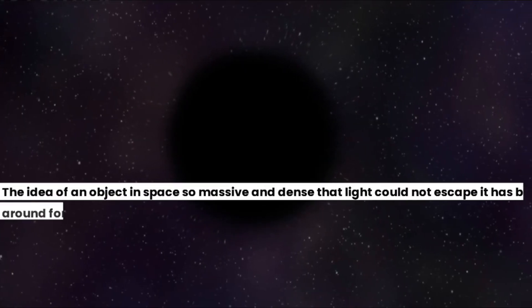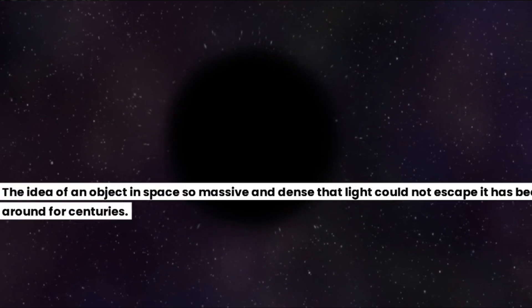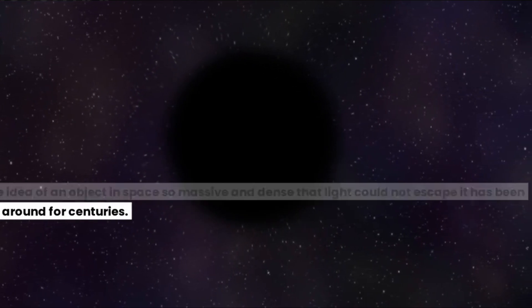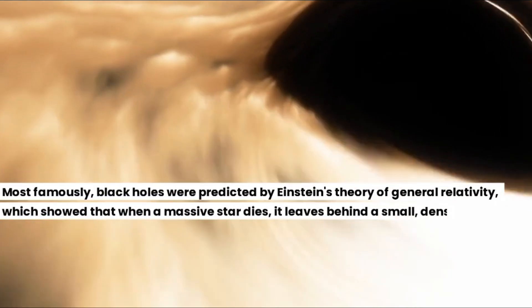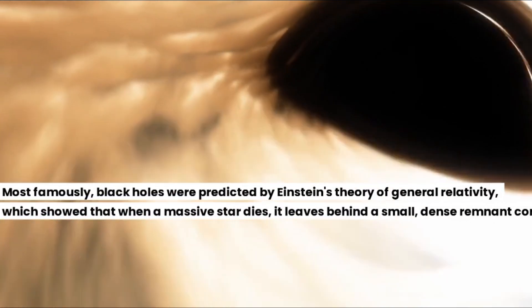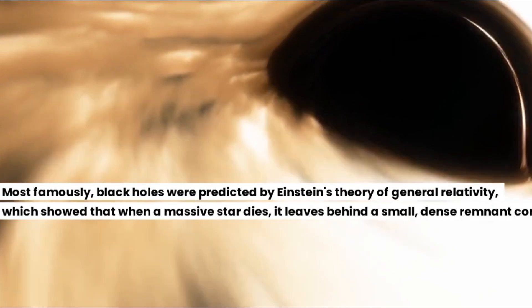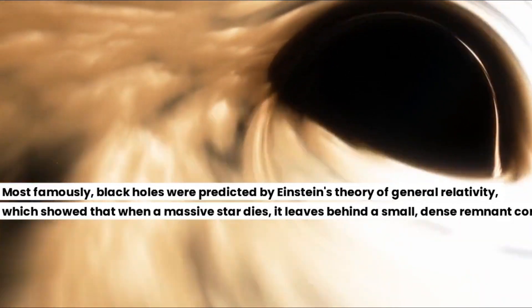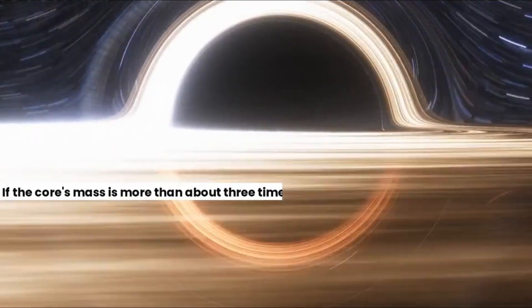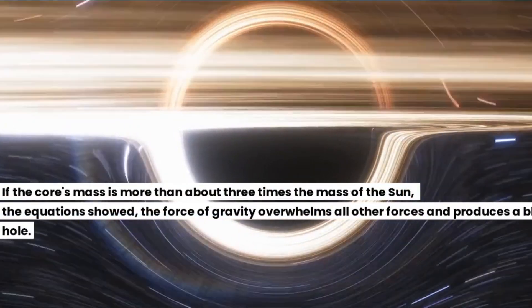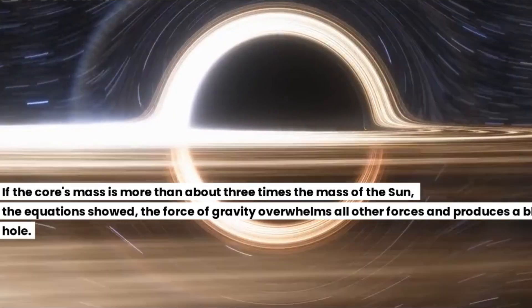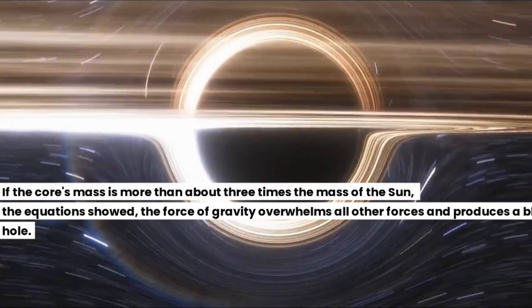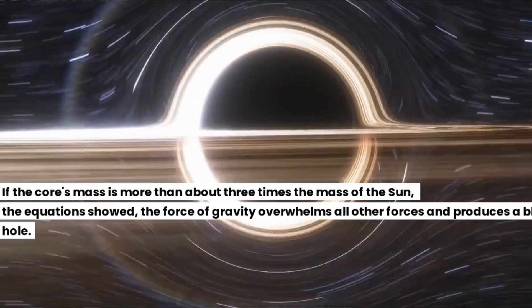The idea of an object in space so massive and dense that light could not escape it has been around for centuries. Most famously, black holes were predicted by Einstein's theory of general relativity, which showed that when a massive star dies, it leaves behind a small, dense remnant core. If the core's mass is more than about three times the mass of the Sun, the equations showed, the force of gravity overwhelms all other forces and produces a black hole.